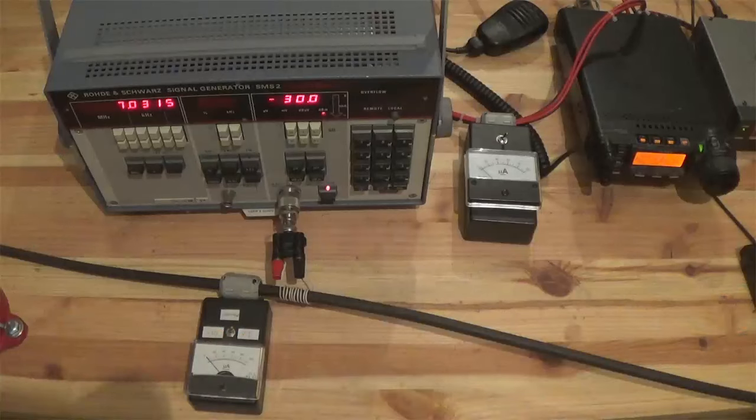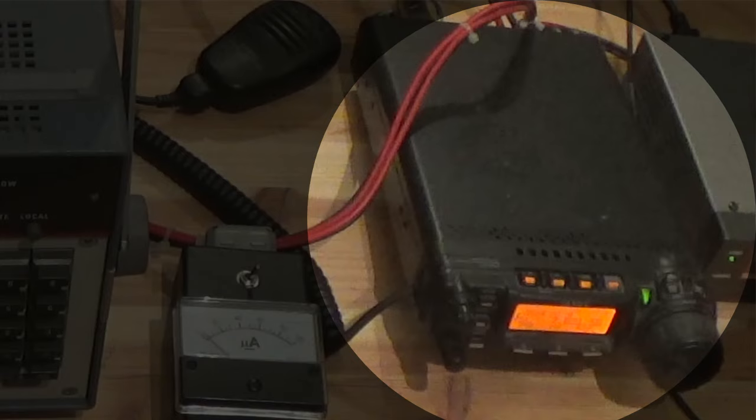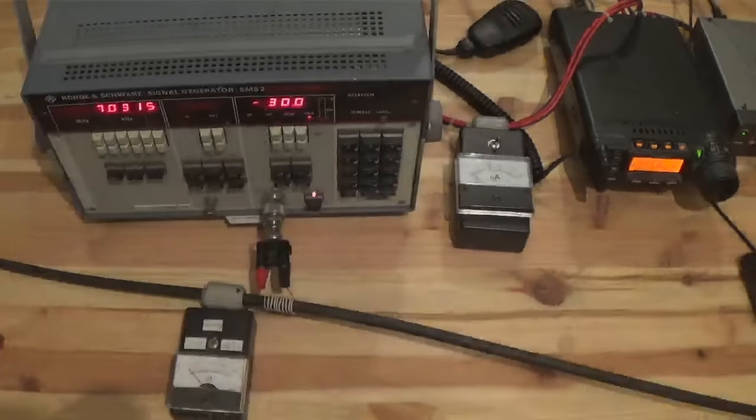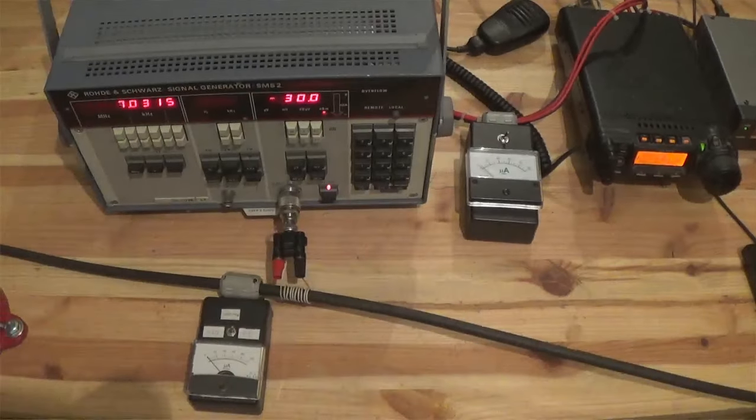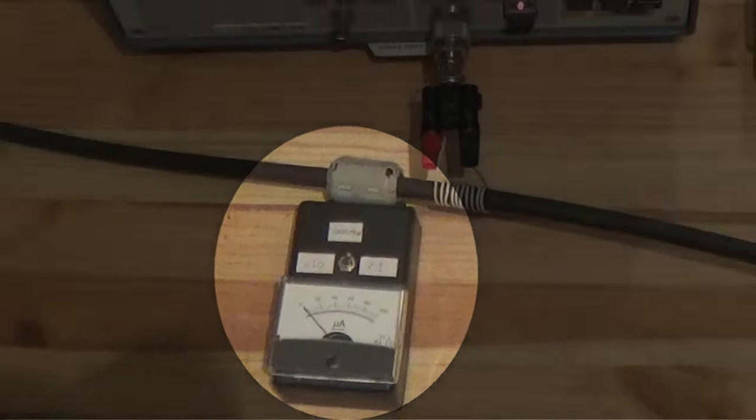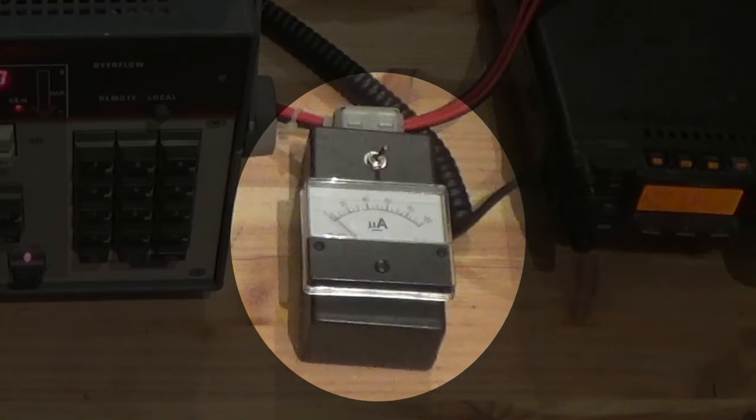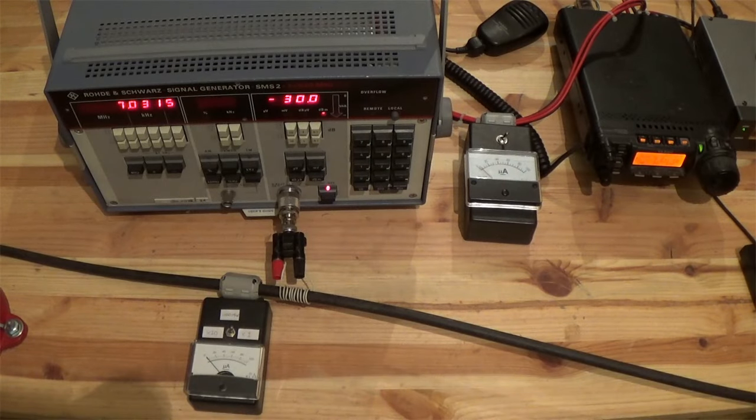Now we shall perform a radiation test. A transmitter will be keyed while the balun will be alternately inserted or bypassed. An RF-meter will monitor the amount of power radiated by the coaxial cable. Another RF-meter will monitor the power radiated by the power cord. We can now key up our transmitter.